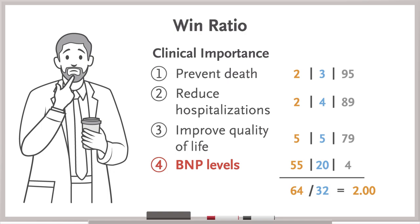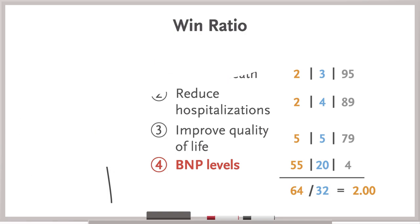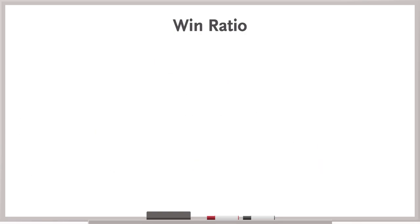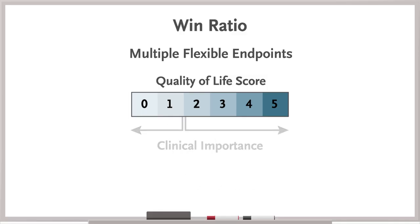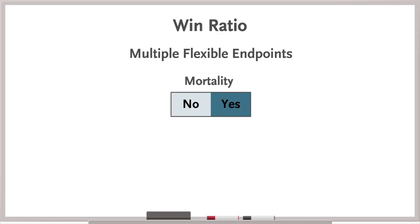Second, win-ratios allow the composite outcome to include multiple flexible endpoints. In this case, you used patient-reported quality-of-life scores in an effort to capture what matters most to patients. Possible downsides are that the minimal clinically important difference in these scales is not always well described, and these scales may be more subject to bias than some other outcomes — say, mortality.